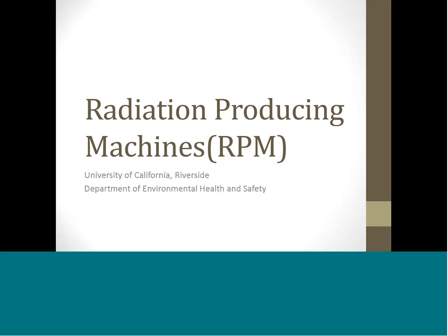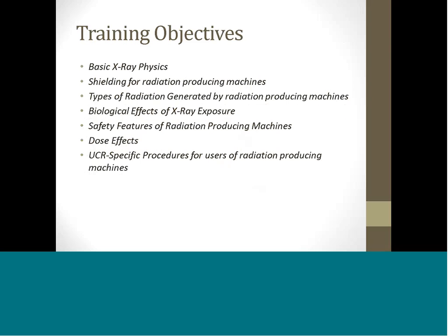Radiation producing machines. By the end of this training, participants will learn basic X-ray physics, shielding concepts for radiation producing machines, types of radiation generated by radiation producing machines, biological effects of X-ray exposure, hazards of working with different types of radiation producing machines, safety features of radiation producing machines, dose effects, and UCR specific procedures for users of radiation producing machines.